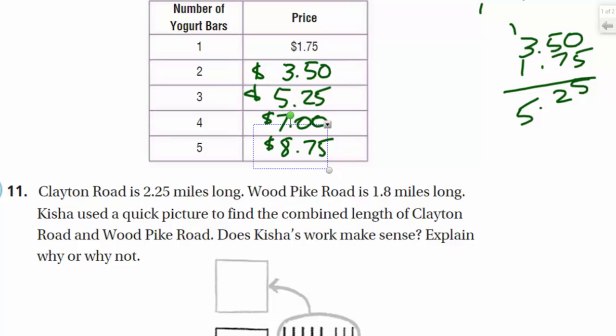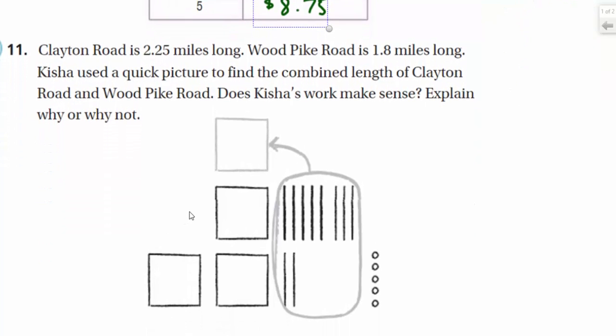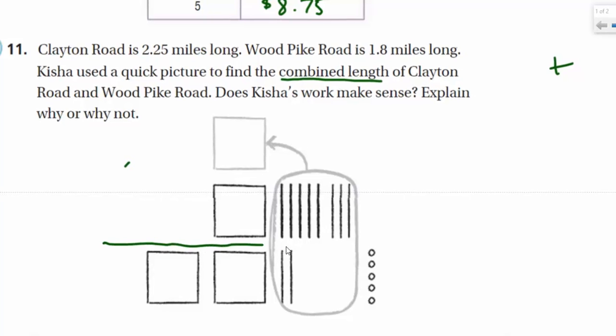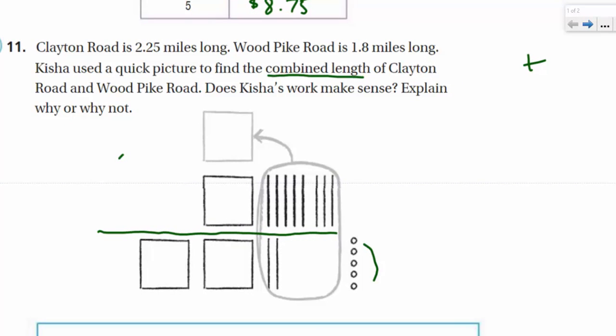Now it says Clayton Road is 2.25 miles long. Wood Pike Road is 1.8 miles long. Keisha used a quick picture to find the combined length of Clayton Road and Wood Pike Road. Does Keisha's work make sense? Explain why or why not. All right, so when we use that word right there, combined length, that should be, when we were talking about that order of operation, you should be thinking addition, because we're adding them together. So, here we have two. I see that from the two holes, from the 2.25. That looks like that could be the two tenths. And then I do see five hundredths here.